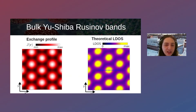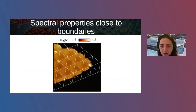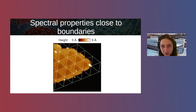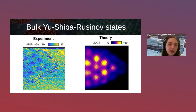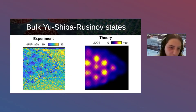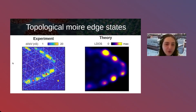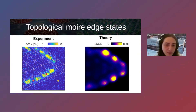The most interesting point is the impact of the exchange modulation on the topological edge states. At energies above the gap, the dI/dV map for the Yu-Shiba-Rusinov bands shows a profile that follows the moiré pattern — a small modulation also seen in theoretical calculations. Going to energies inside the topological gap, where the topological in-gap states appear, the modulation of the edge states again follows the moiré pattern, matching the theoretical calculation.